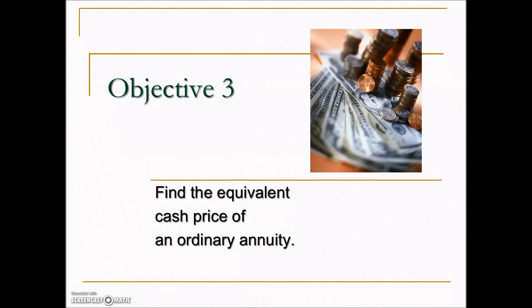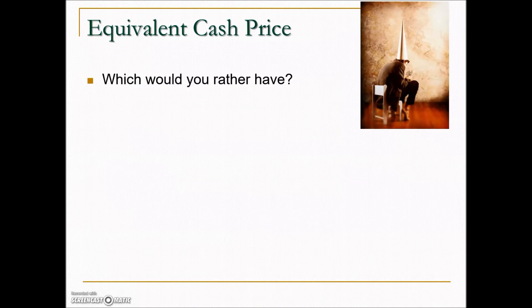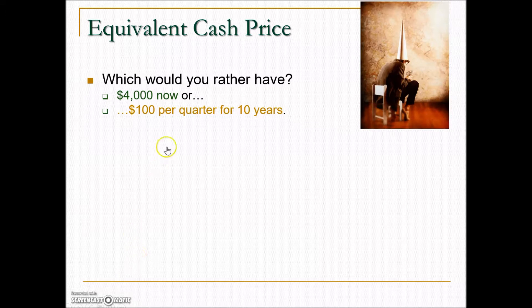In this section we will find the equivalent cash price of an ordinary annuity. Which would you rather have: $4,000 now or $100 per quarter for 10 years? If you multiply out 100 times 4 we get 400, times 10 is $4,000.